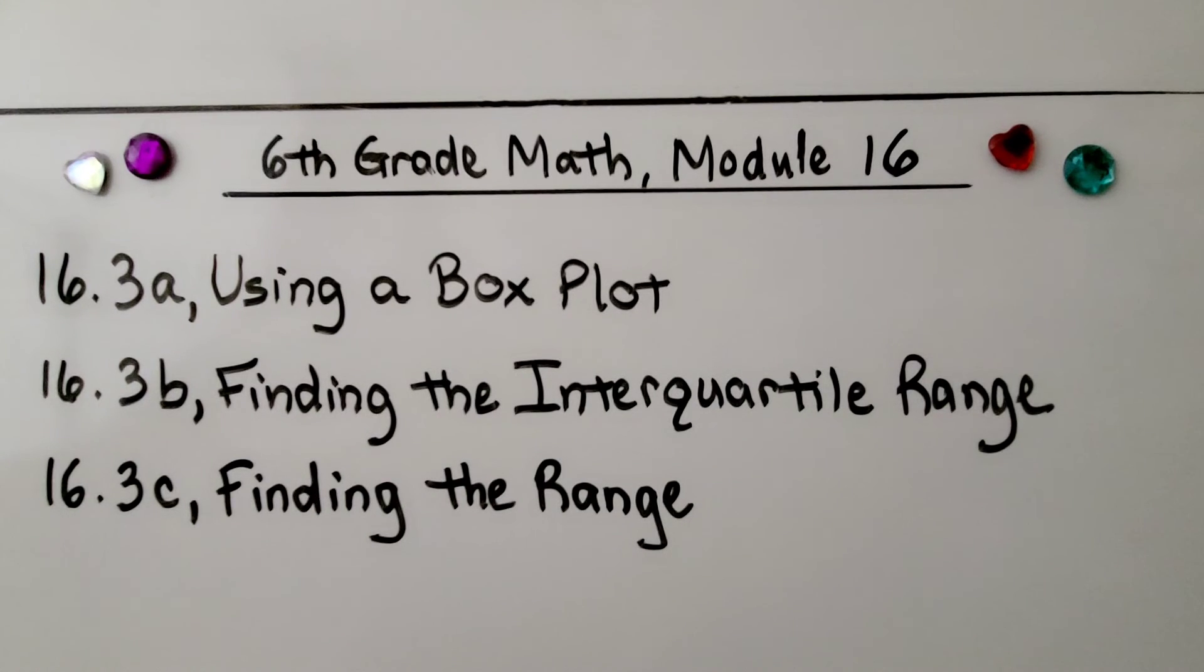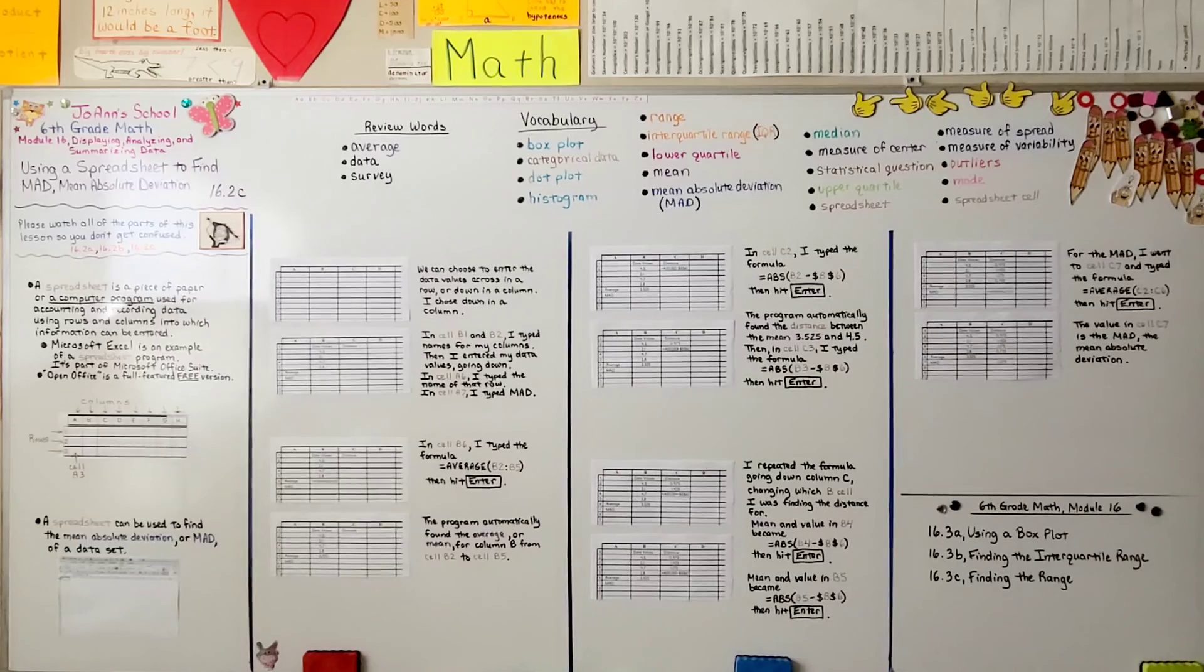We're finished with lesson 16.2 and we're moving on to 16.3, which is split into three parts. The first part is using a box plot. Now, a lot of businesses use Excel spreadsheets to keep track of their purchases, their expenditures, their sales and their income. And I hope this helped you understand. And I hope you have a great day and join me for the next lesson. Bye.